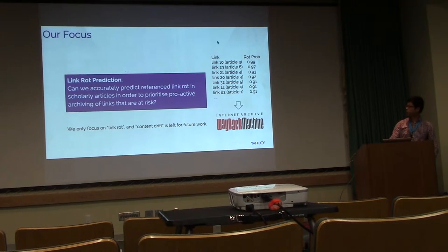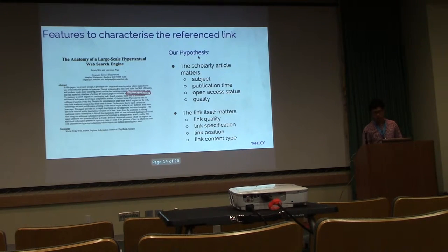Just to give you an example, these are the links that are referenced, ranked by the predicted link rot probability from our learned predictor. And then we can guide this into the Internet Archive machine so that they can use this ranked list to archive the links that are more likely to rot. As I said, we're trying to develop a machine learning predictor, so we need to engineer a set of features to characterize the link rot problem.